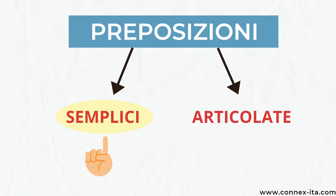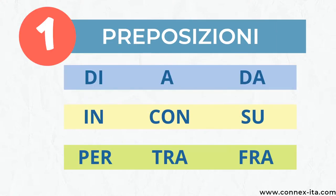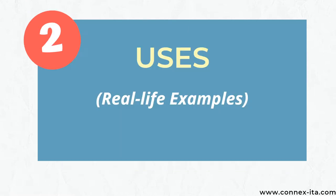Today we'll only focus on the first ones to keep this lesson simple, but I'm going to do another video on the second group of prepositions so make sure you subscribe not to miss it. With this being said, let's have a look at the prepositions in Italian. They are the following: di, a, da, in, con, su, per, tra, fra. But the tough part is knowing when to use them, so let's go through the main uses of each of those prepositions with some real life examples.